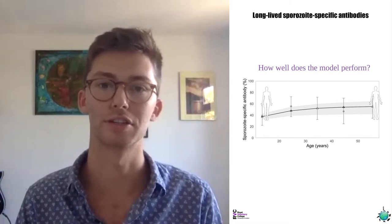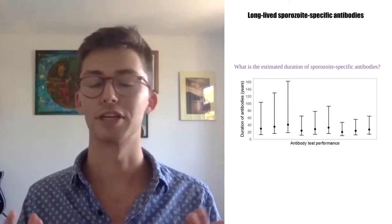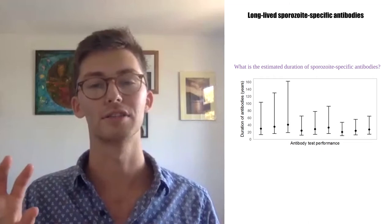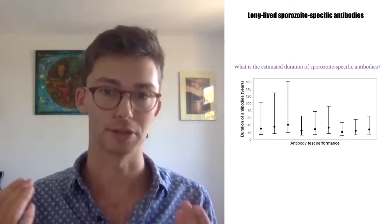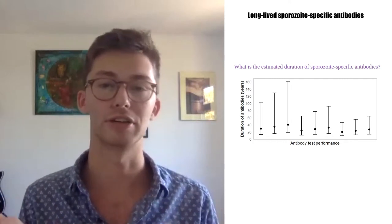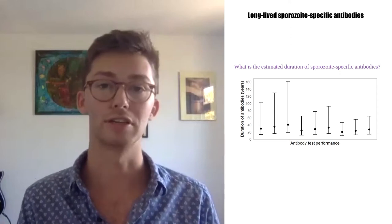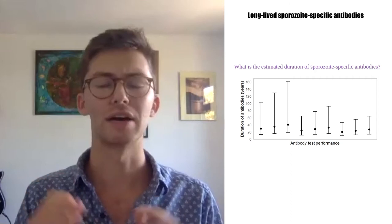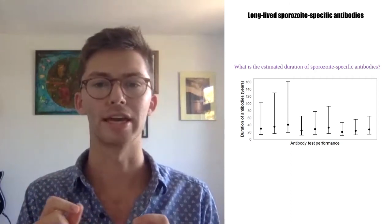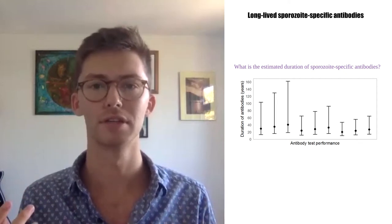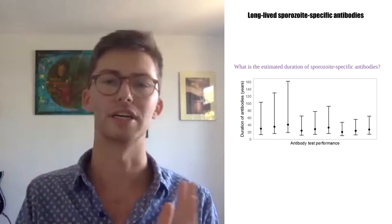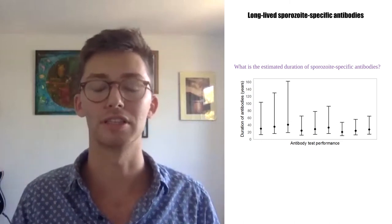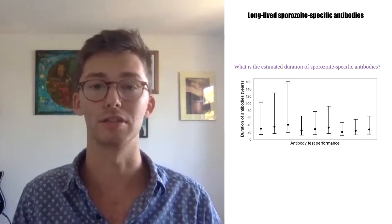That's when this next graph comes in. Along the bottom axis you have the antibody test performance — this tells you how good the test is at detecting the particular antibody. It could be that the test has a very high false positive or false negative rate, or maybe it's very good with very few of these. If we don't have specific values for this, any estimate we have on the duration of the antibody in blood might be quite biased, because we're making assumptions about how good the test is.